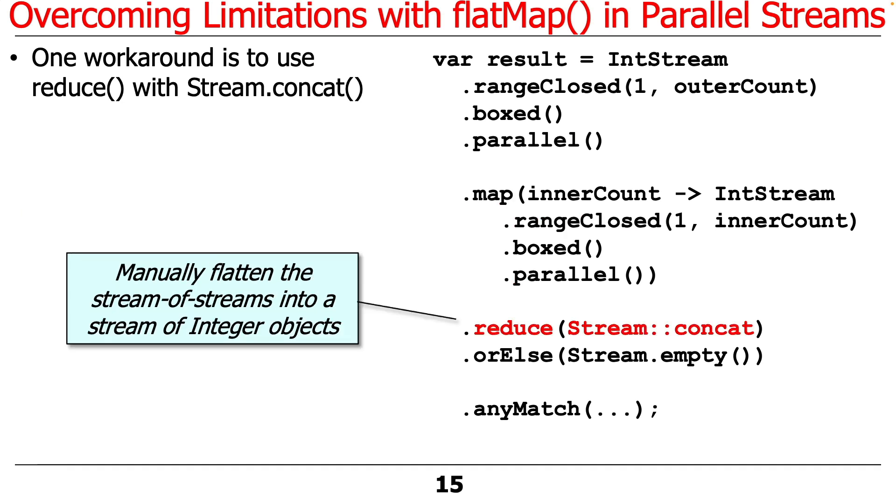So what we do to get around this is we put the reduce operation after map. And then we give it the Stream.concat method reference. And reduce followed by Stream.concat will flatten the stream of streams of Integer objects into a stream of Integer objects.